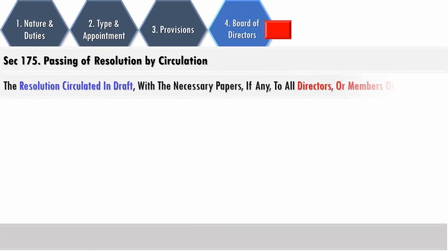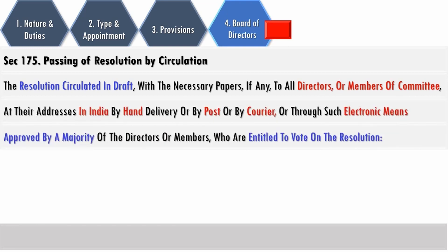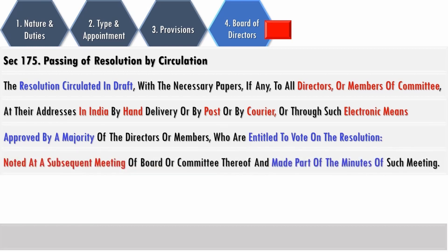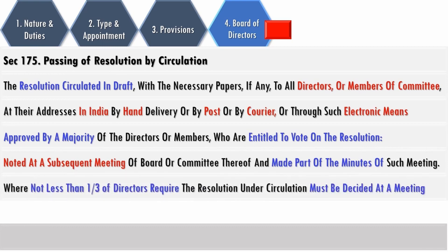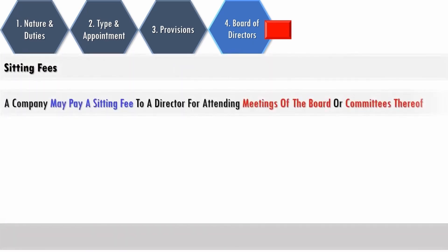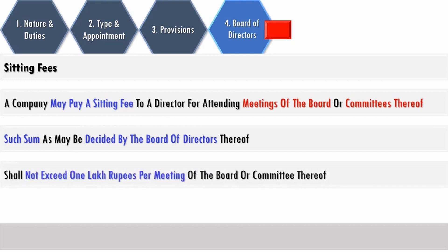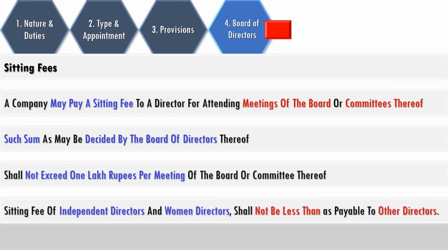Under Section 175, passing of resolution by circulation: a resolution is circulated in draft to all directors or members of a committee at their addresses in India by hand delivery, post, courier, or electronic means. It is approved by a majority of the directors or members entitled to vote on the resolution. It is noted at a subsequent meeting of the board or committee and made part of the minutes. Where not less than one-third of directors require that the resolution must be decided at a meeting, the chairperson shall take it to be decided at a board meeting. A company may pay a sitting fee to a director for attending meetings of the board or committees, as decided by the board of directors; it shall not exceed rupees one lakh per meeting. Sitting fees shall be on par between directors, whether independent directors or woman directors.